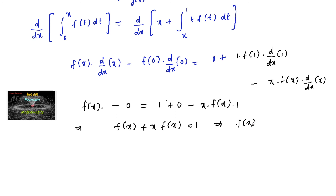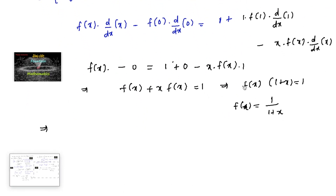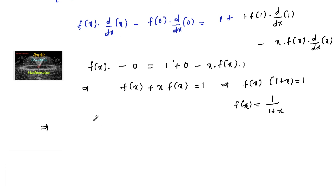Taking f(x) common: f(x)·(1 + x) = 1, so f(x) = 1/(1 + x). Now we find f(1): f(1) = 1/(1 + 1) = 1/2. So f(1) = 1/2. Thank you.